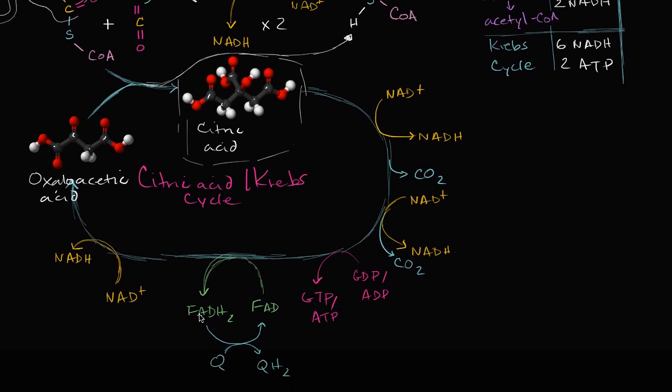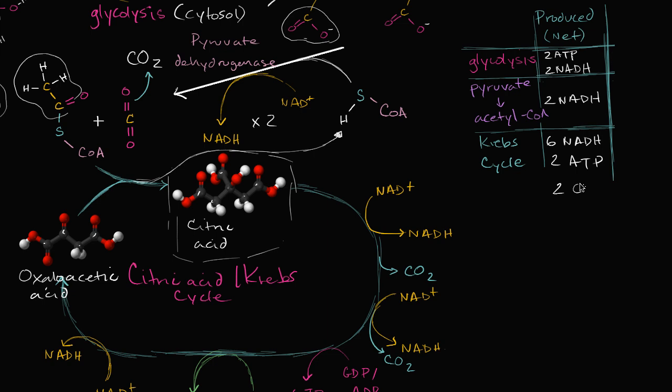And then we have this other coenzyme right over here, FAD, that gets reduced to FADH2, but that stays covalently attached to the enzymes that are facilitating it, so eventually that's being used to reduce coenzyme Q to QH2. So I'm just going to write the QH2 here, but once again you're going to get two of these. So two QH2s. Now let's think about what the net product over here is going to be. These coenzymes, the NADH, the QH2, these are going to be oxidized during oxidative phosphorylation and the electron transport chain to create a proton gradient across the inner membrane of mitochondria. We're going to go into much more detail in the future, but that proton gradient is going to be used to produce more ATP.